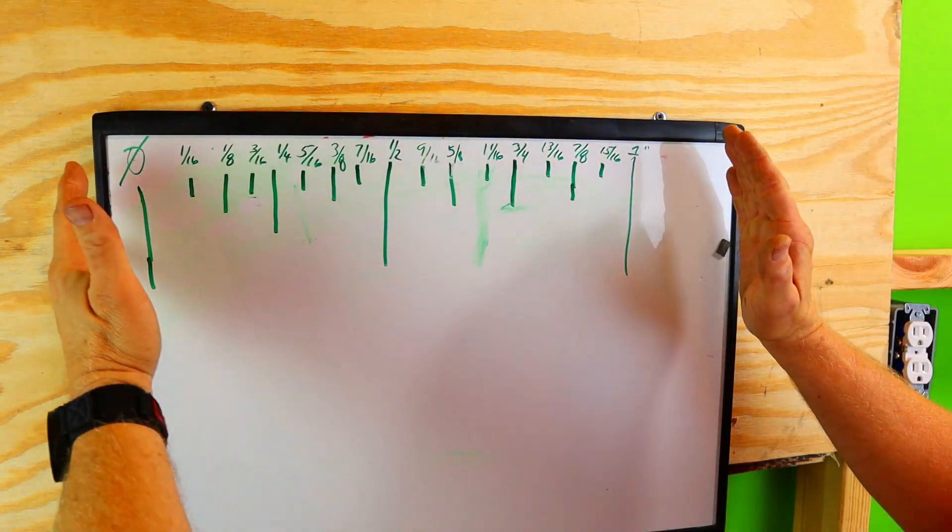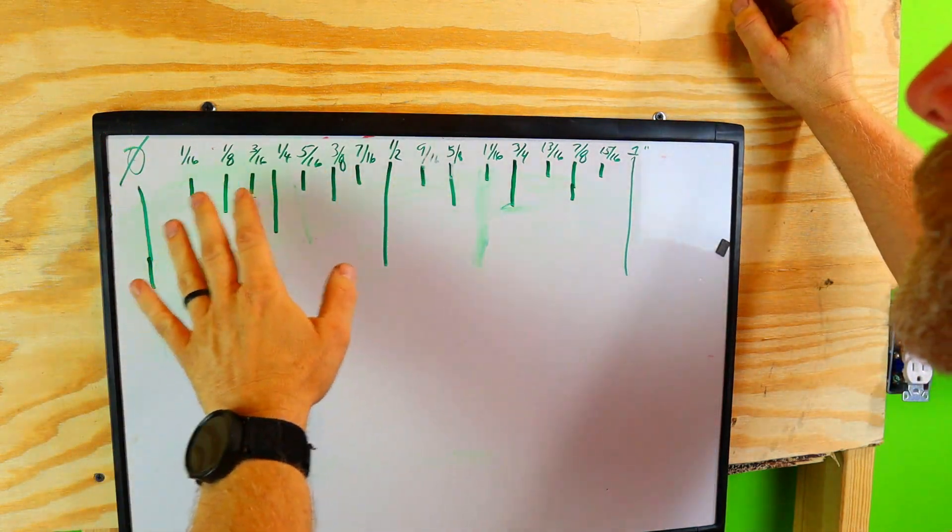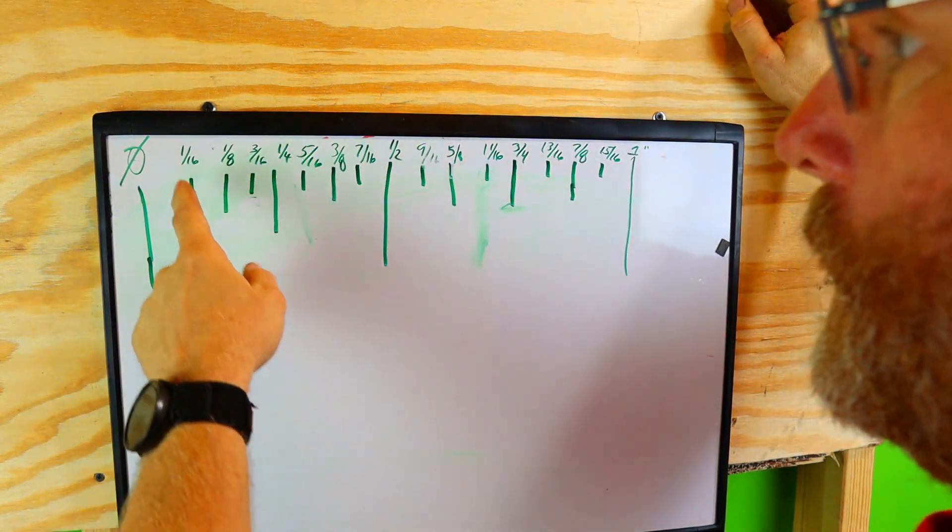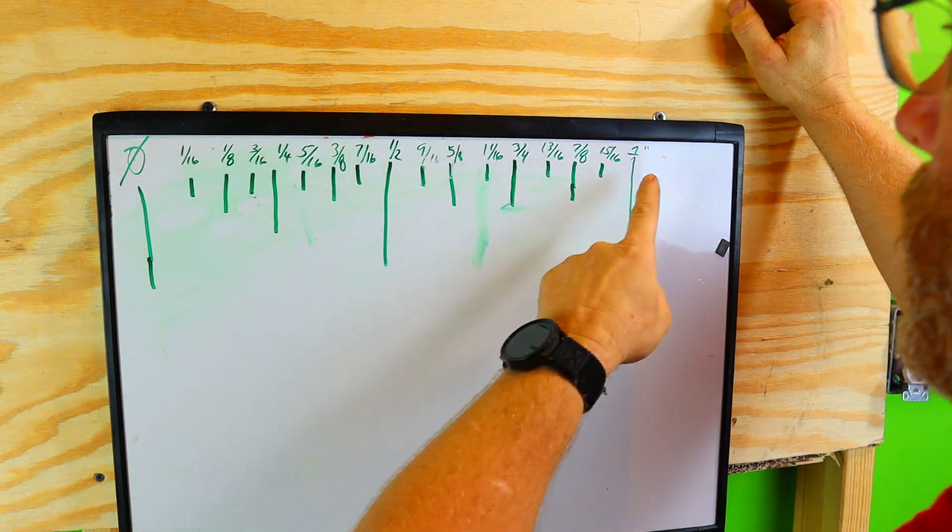So stick around guys, I think you're going to enjoy this one. Right here we have a ruler. Now if you guys do not understand a ruler, we're going to start at zero and we're going to go to one inch.